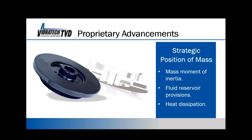Space constraints are a growing issue — pulleys on the front of engines are getting smaller. This particular damper for the 2JZ inline-six is about eight and a quarter to eight and a half inches in diameter. It weighs about a pound less than our small block Chevy damper but does about three times the work because the mass is located further out on a larger diameter. So we get three times the vibration control out of a lighter damper — a key design consideration for performance applications.